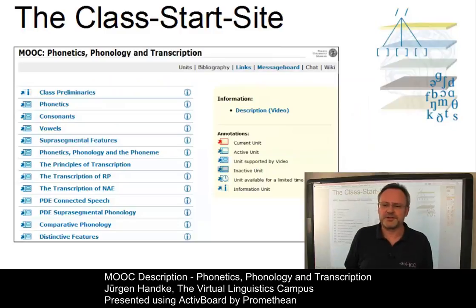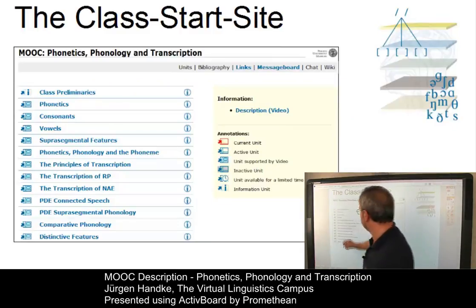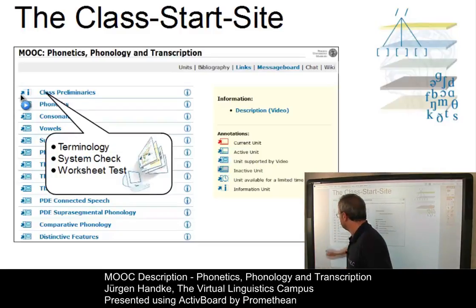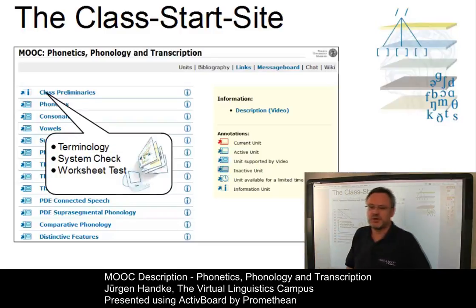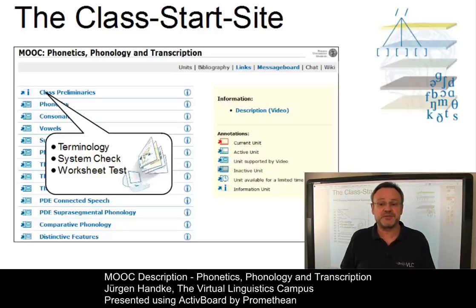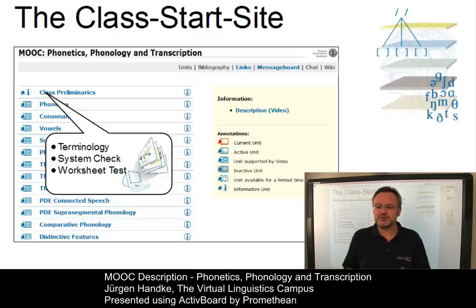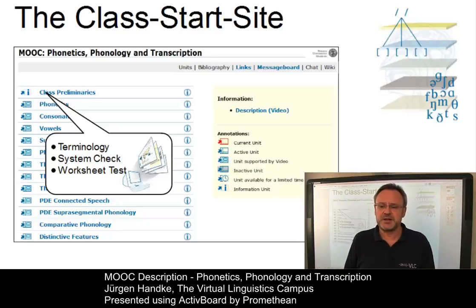The core of the class are the 13 units where the first one, the class preliminaries, informs you about some general aspects of the class and makes further suggestions about how to study online. Also the most basic functions of the program — that is navigation and buttons etc. — are explained here.